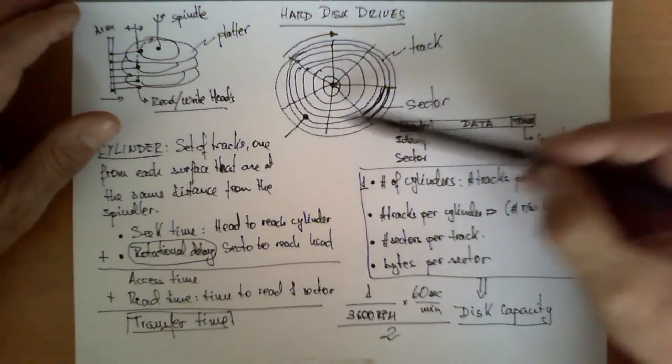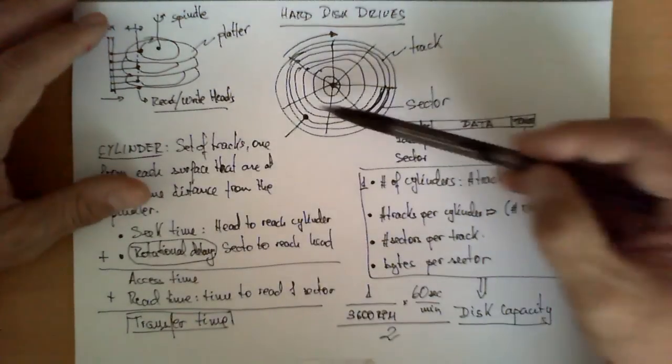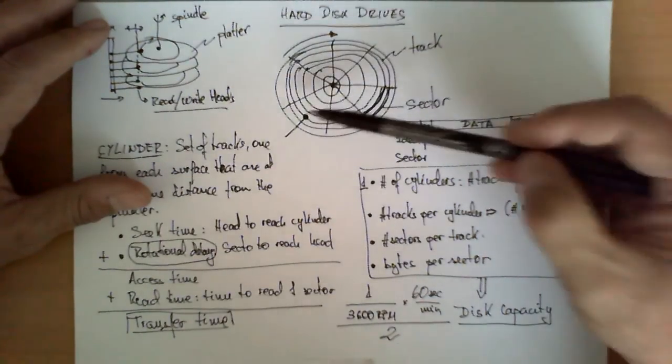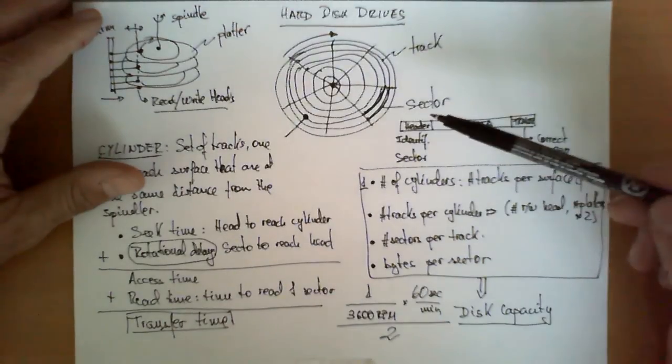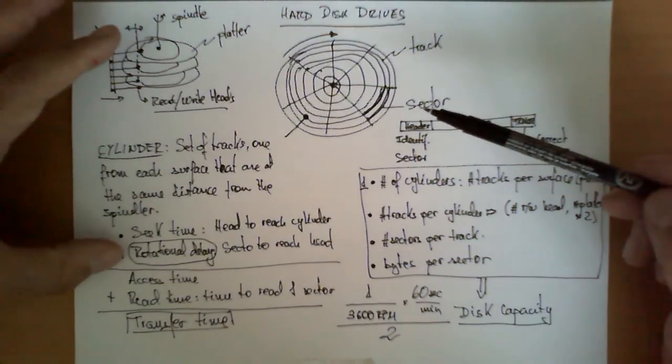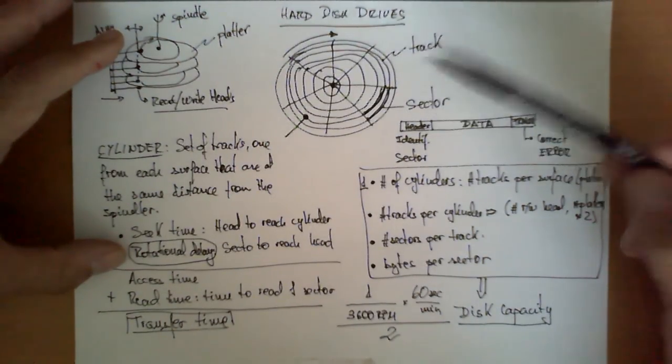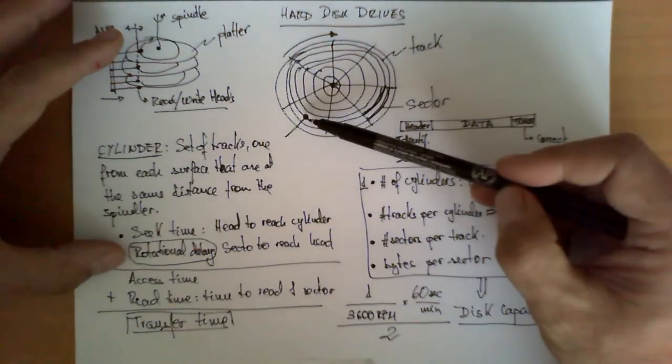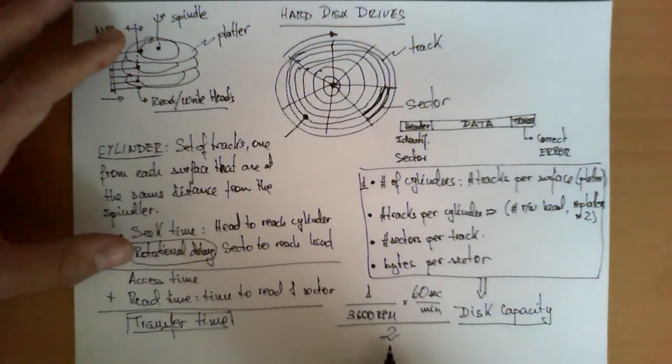Now, this half rotation is very important because if we want to calculate what is the value of the rotational delay, it could be 0 if the sector is right here next to the head, or it could be an entire rotation if the sector just passed underneath the head, and we have to wait until it comes back. So, what is typically done is the rotational delay is computed in average, and in order to take the average, what we assume is that the sector is halfway down, so it's neither next to the head, nor just past the head. It's somewhere in between, and that's the reason why we divide here by 2.